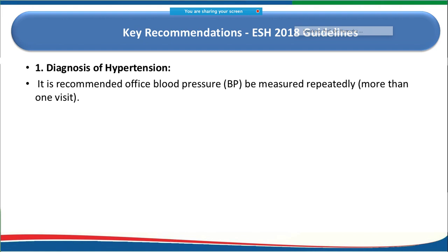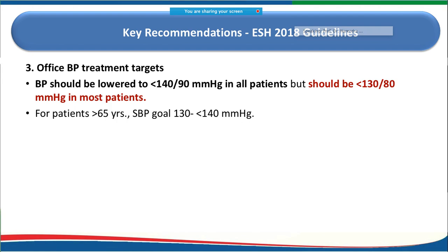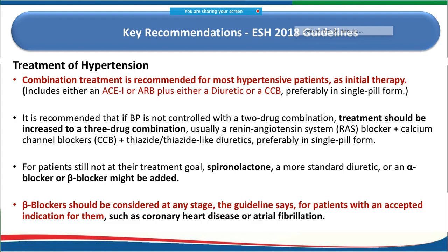At the European Society of Hypertension meeting, classifications were updated to include optimal, normal, high-normal, and grade 1–3 hypertension, plus isolated systolic hypertension. European guidelines are more lenient than American ones — they accept up to 140/90 mmHg, prefer less than 130/80 for most patients, and allow 130–140 for older patients.